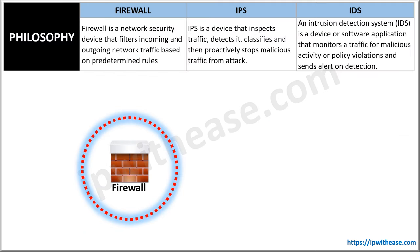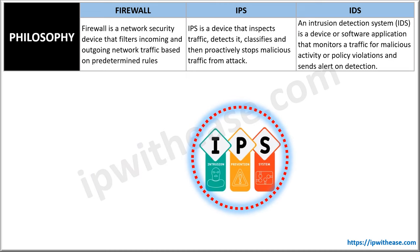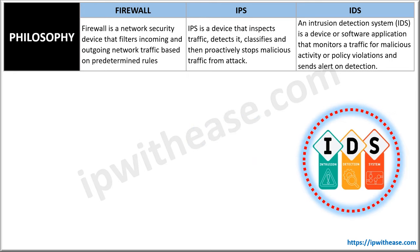The main difference is that a firewall is a security device which filters the incoming and outgoing traffic based on a predefined ruleset configured by the security administrator. In contrast, an IPS is responsible for inspecting, detecting, classifying, and then stopping malicious traffic from attacks. IDS is also a close relative of IPS; however, IDS will not block the traffic like IPS. It will monitor the traffic for malicious activity and only send an alert on its detection. This alert is generally sent either to the network or security administrator, or to a SIEM system.